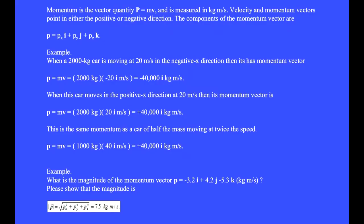Momentum is the vector quantity P equals mass times velocity, and is measured in kilogram meters per second. This combination has never yet acquired another name.